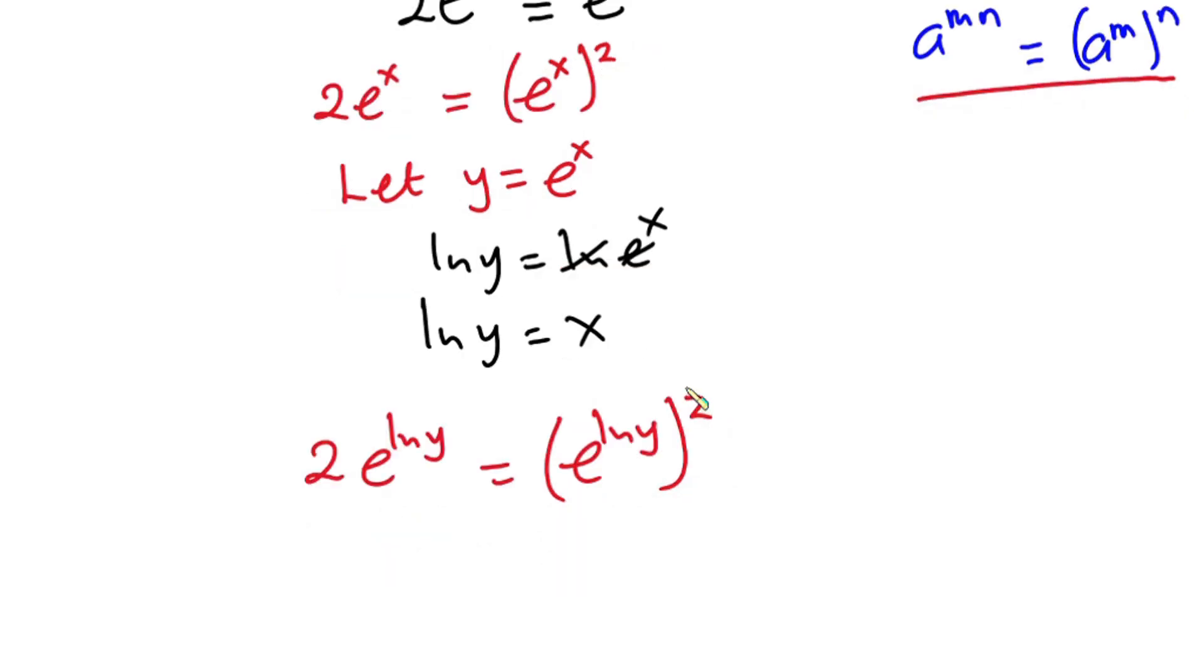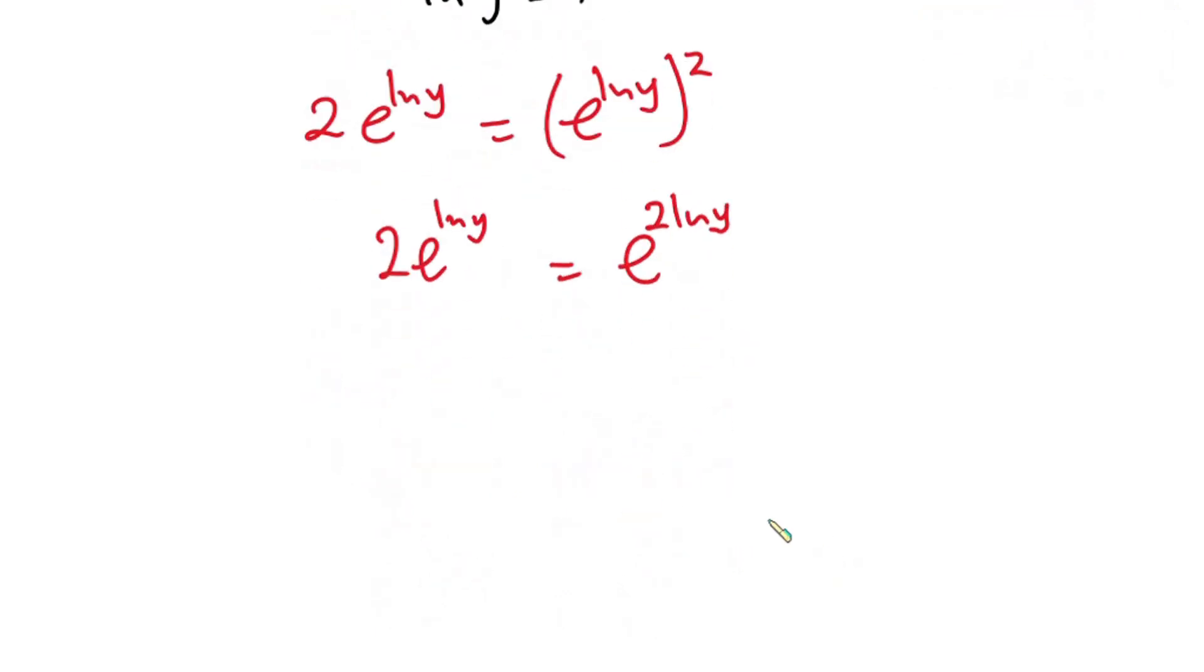Now, applying this rule from indices, I can just multiply these two by this ln of y. So we have 2 times e to the power natural log of y is equal to e to the power 2 times natural log of y.